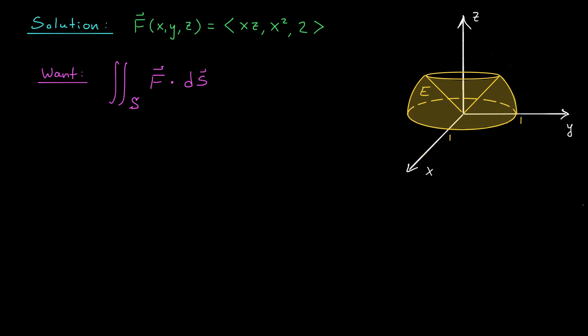Now what about our surface S? S is the boundary of this solid, excluding the plane z equals 0. So really, it's got this spherical wall around the outside, this conical wall along the inside, but it's open at the bottom.